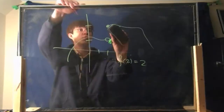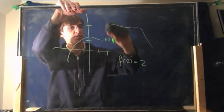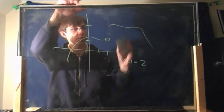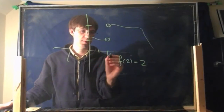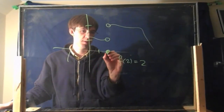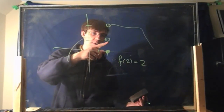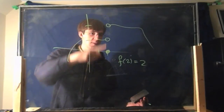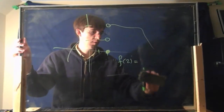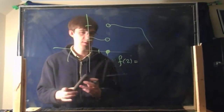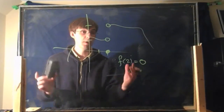Sometimes you'll see two empty circles — that means the value is neither of those places. Maybe it's something like this, where the value is actually down here. So in that case, f(2) equals 0.